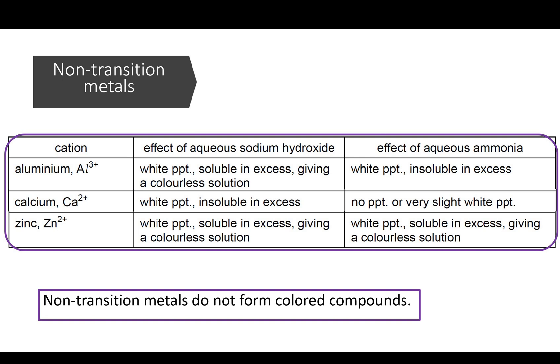This section is on non-transition metal ions, which do not form colored compounds. So all of the precipitate formed here are white. The only test that does not form a precipitate is calcium with ammonia, and we'll get to that in a minute.